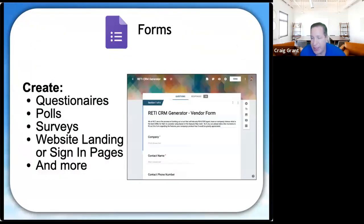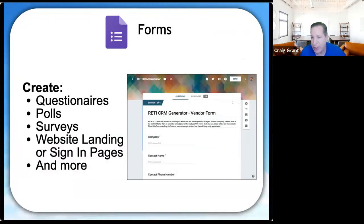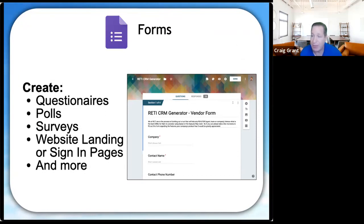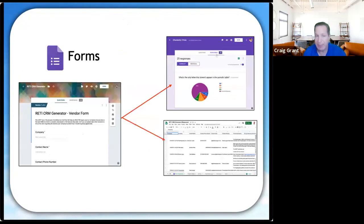Google Forms is kind of like Access but requires zero code. You can create your own questionnaires, polls, and surveys very easily. Someone pre-asked if there's a way to have someone fill out a survey — Google Forms is an easy, free way to do it. You create your questionnaire, someone fills it out, and it immediately creates a spreadsheet of every person's answers.